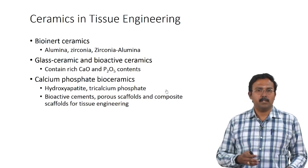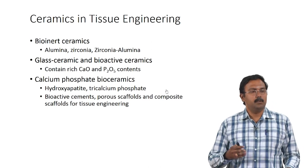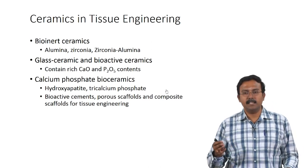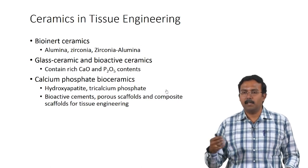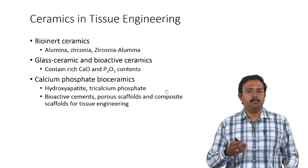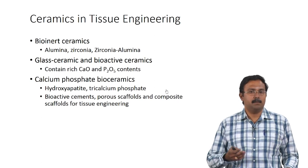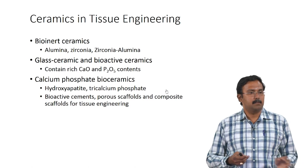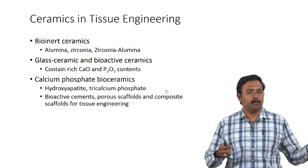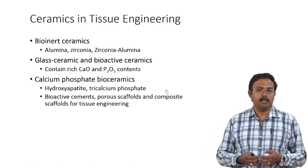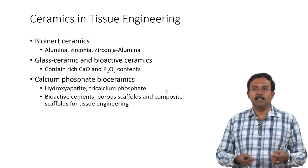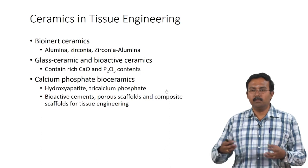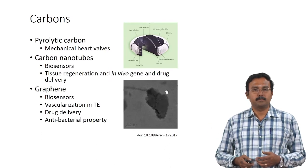People use bioactive cements, porous scaffolds, and composite scaffolds for tissue engineering. People also try to emulate what is seen in the body — using polymers along with ceramics so that you can actually create bone-like tissues.